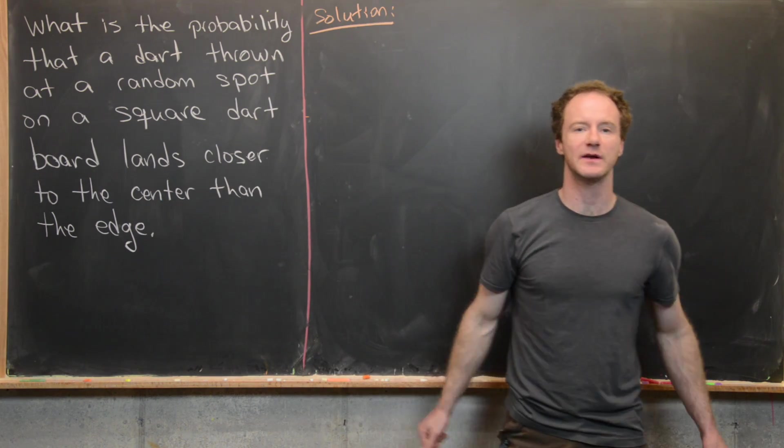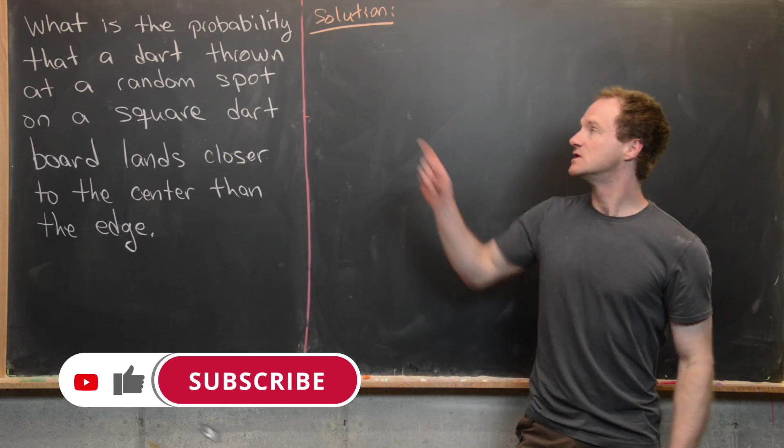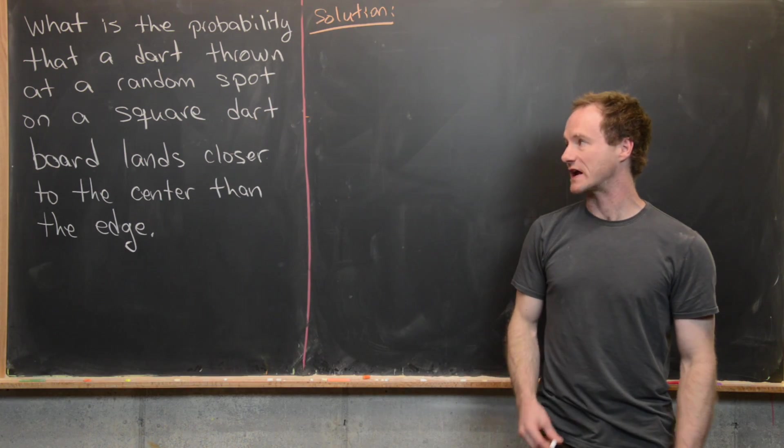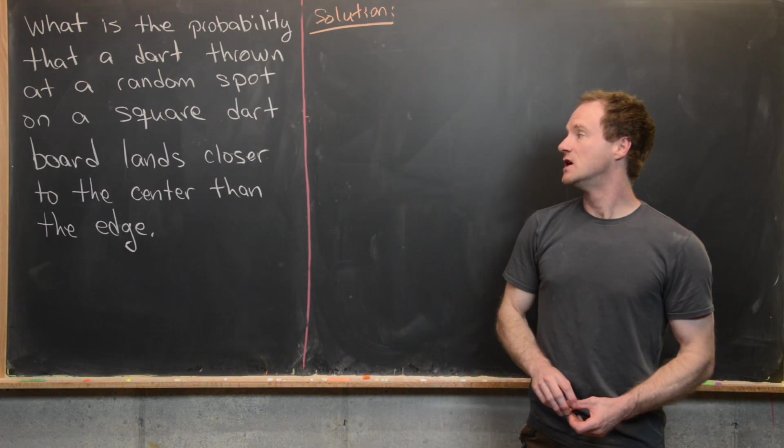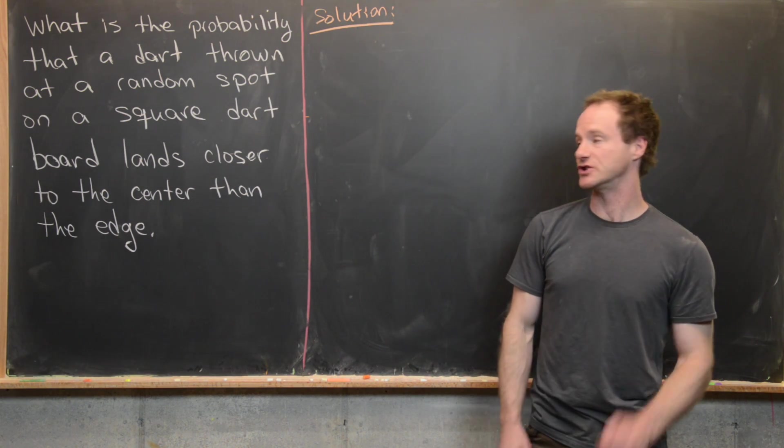Here we're going to look at a nice little probability problem that can be solved with first semester calculus techniques. So our goal is to find the probability that a dart thrown at a random spot on a square hits the board closer to the center than it does the edge.